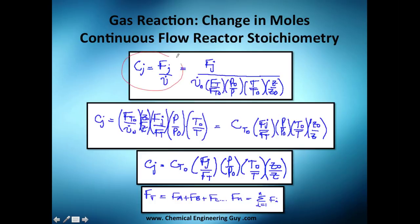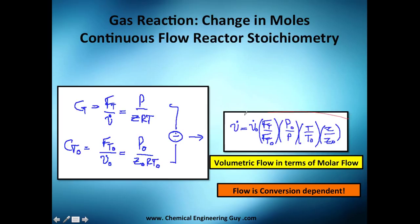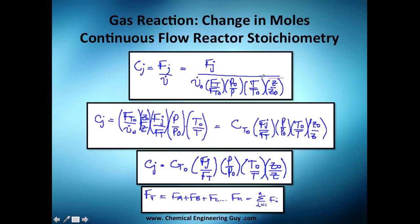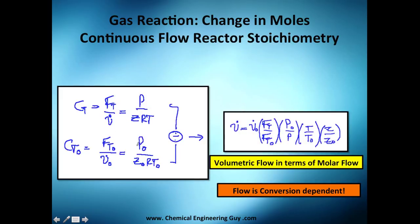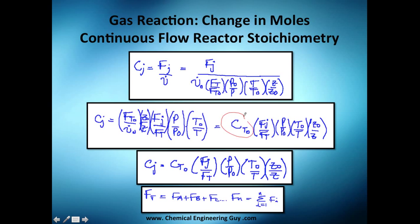At any moment, concentration of j equals the molar flow of j divided by the volumetric flow rate v. We already have one expression for v — that large expression we derived — so let's substitute it. After some algebraic rearrangement, we get F_T0 divided by v0, the pressures, and temperatures, and we recognize that this is just the definition of initial concentration C_T0. So we get C_T0 times the pressure-temperature-compressibility factor.